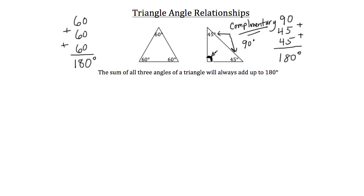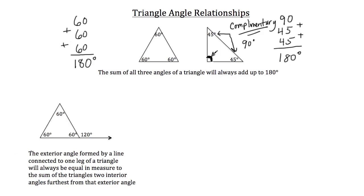The other relationship we want to discuss today is that the exterior angle formed by a line connected to one leg of a triangle will always be equal in measure to the sum of the triangle's two interior angles further from that exterior angle. That's a lot, so we're going to break it down step by step. Let's talk about the first part of that statement: the exterior angle formed by a line connected to one leg of a triangle.